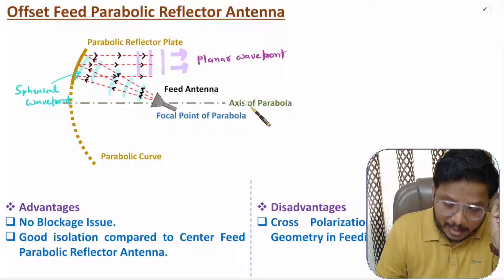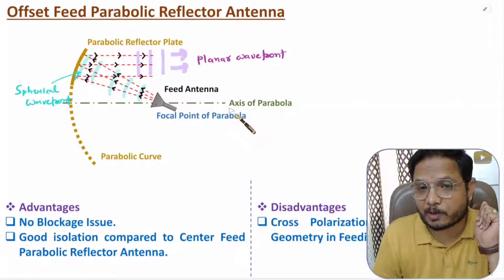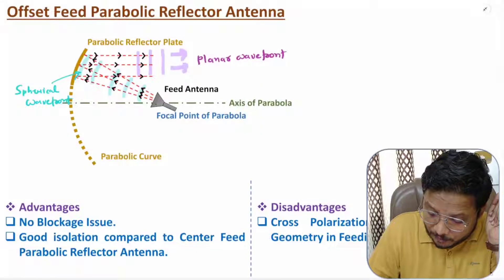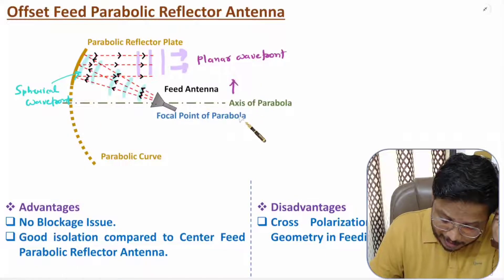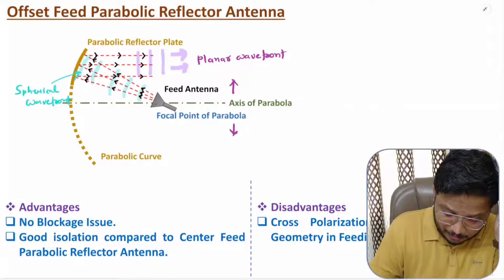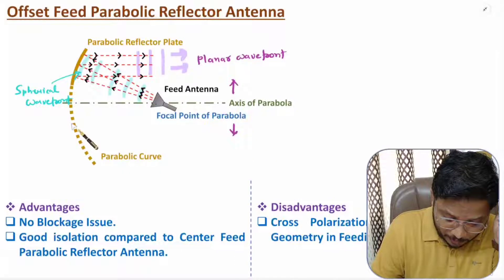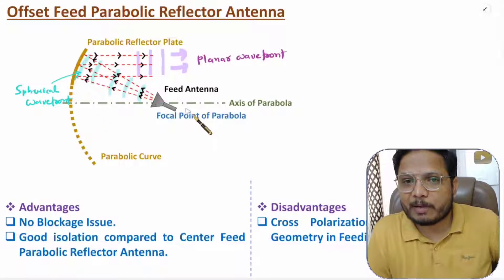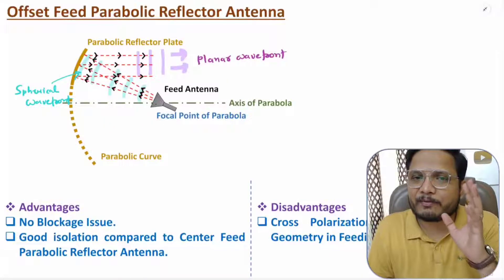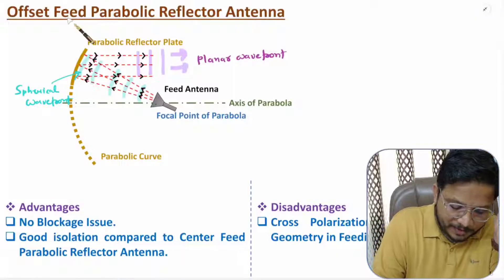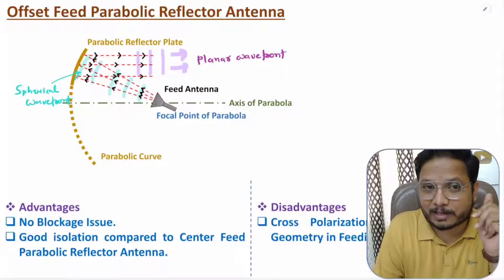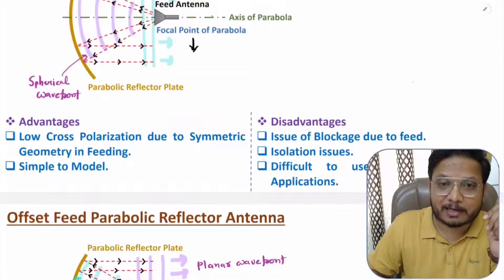However, in terms of geometry, the offset feed design is asymmetric with respect to the axis of parabola. On one side we have the reflector plate, but not on the other side. Because this design is not symmetric, there will be an issue of cross polarization. So while we resolve the issues of blockage, isolation, and low noise applications, we introduce the issue of cross polarization that was not present with the center feed design.